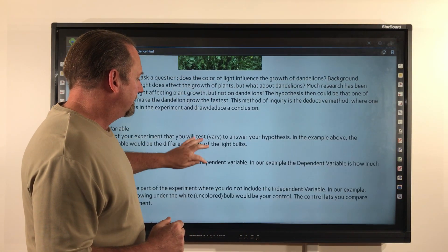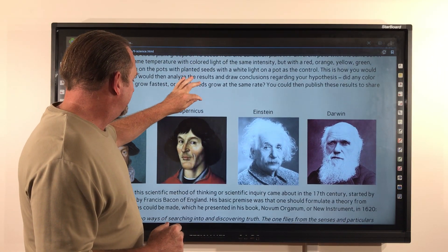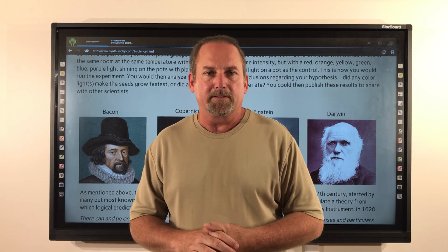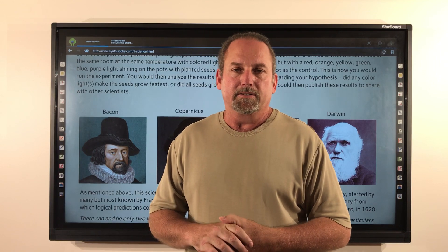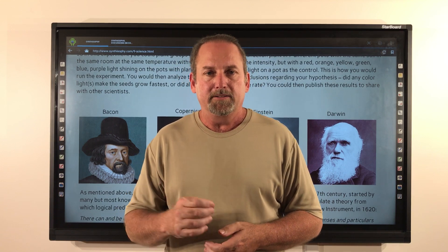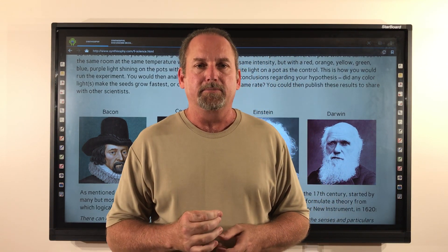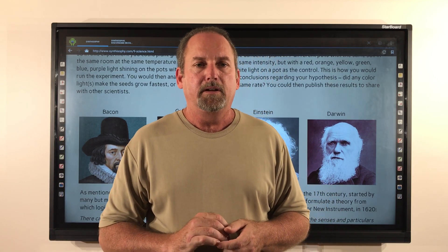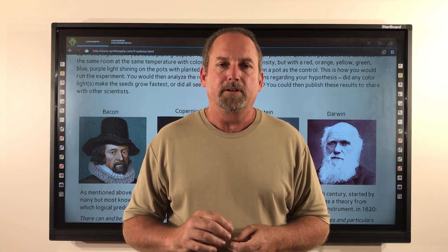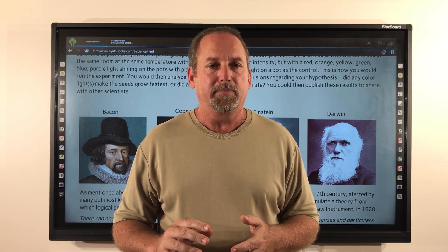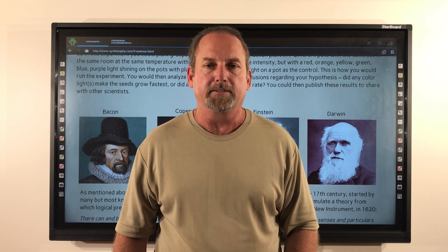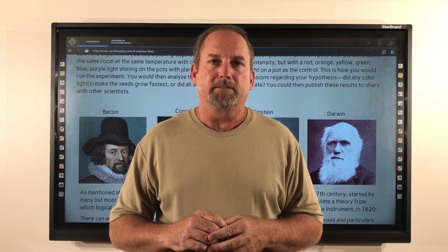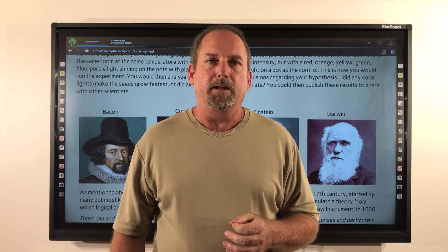With this in mind, let's take a look at some of the scientists well known in this Age of Enlightenment. The scientific method and Age of Enlightenment came about in the 17th century, and it was started by many, but is most known by Francis Bacon of England. His basic premise was that one should formulate a theory from which logical predictions could be made, which he presented in his book Nova Morganum, or New Instrument, in 1620. There he said: quote, there can be only two ways of searching into and discovering truth. One flies from the senses and particulars to the most general axioms, and from these principles proceeds to a judgment and to discovery of the lower axioms. The other derives axioms from the senses and particulars, rising by a gradual and unbroken ascent, so that it arrives at the most general, or higher, axioms last of all. This is the true way, but as yet untried.